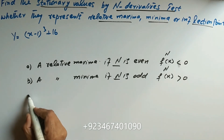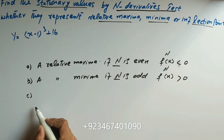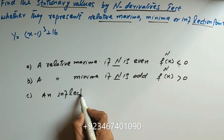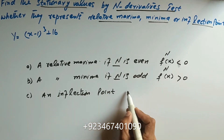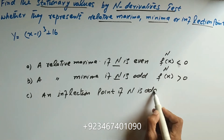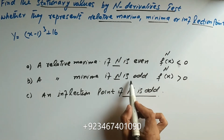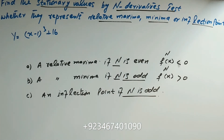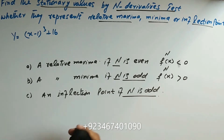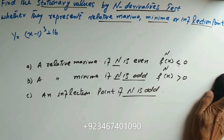The last case is an inflection point. If n is odd and the nth derivative is non-zero, then the point is an inflection point. These are the three conditions to keep in mind. Now we can take some questions and try to solve them.